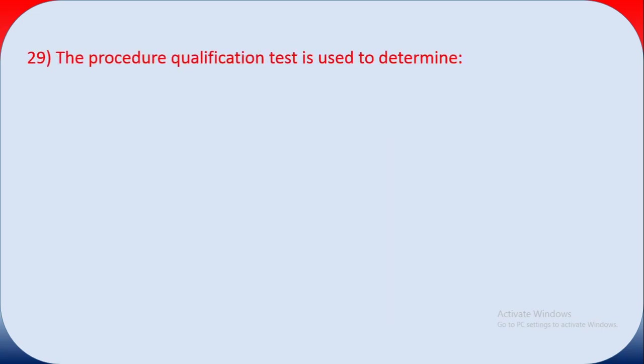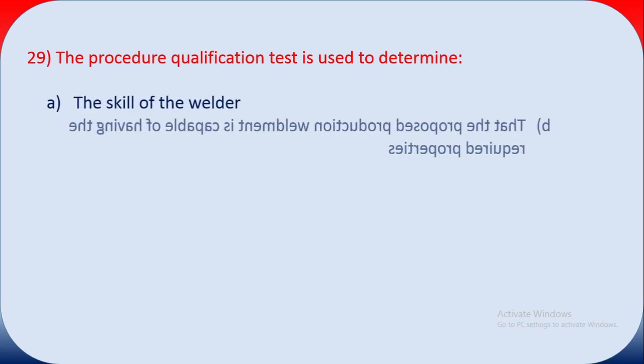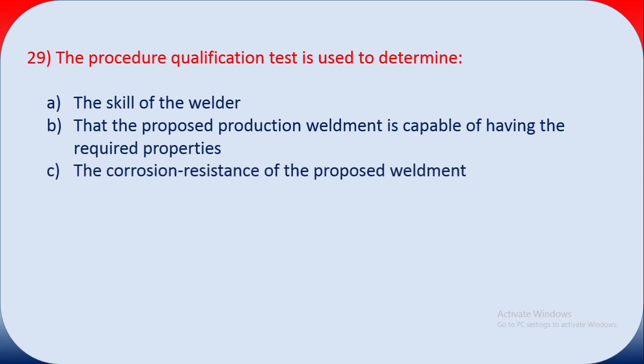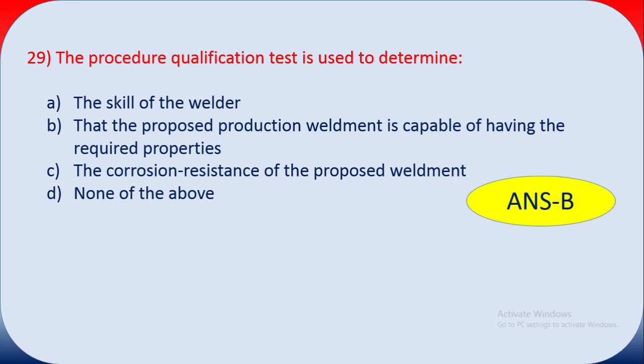Question twenty-nine: the procedure qualification test is used to determine — A the skill of the welder, B that the proposed production weldment is capable of having the required properties, C the corrosion resistance of the proposed weldment, D none of the above. The answer is B — the procedure qualification test determines that the proposed production weldment is capable of having the required properties.